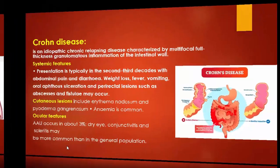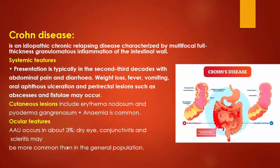Crohn's disease is an idiopathic chronic relapsing disease characterized by multifocal full-thickness granulomatous inflammation of the intestine. Symptoms typically appear in the second to third decade with abdominal pain, diarrhea, low-grade fever, vomiting, oral and rectal abscess, ulceration, and fistula. Cutaneous lesions include erythema nodosum and pyoderma gangrenosum, and anemia is common. Ocular features include acute anterior uveitis with dry eye, conjunctivitis, and scleritis.